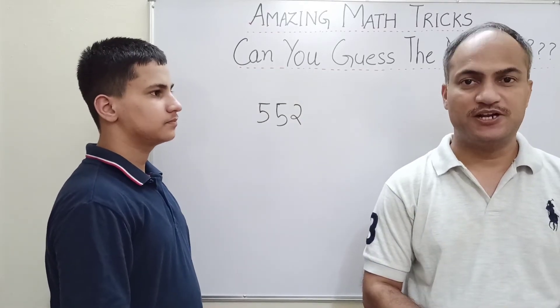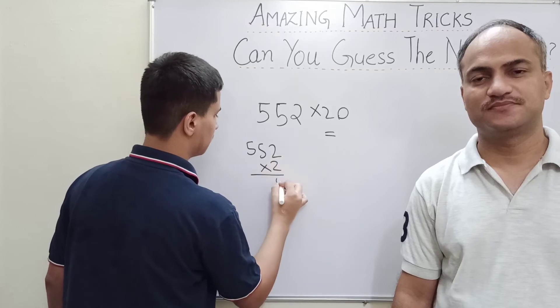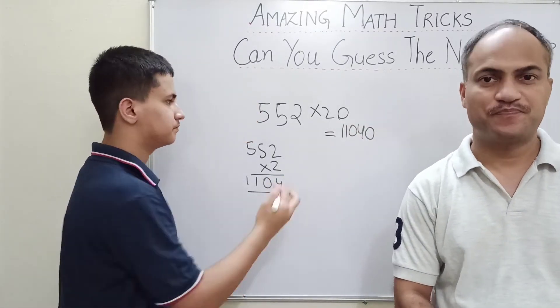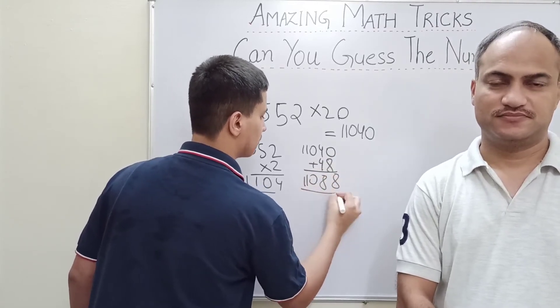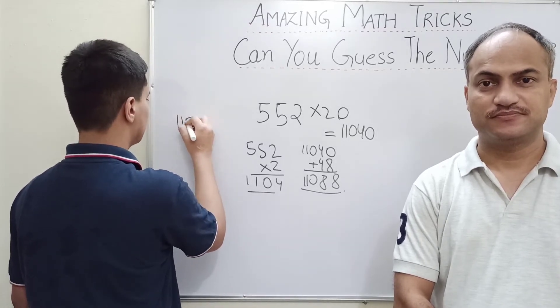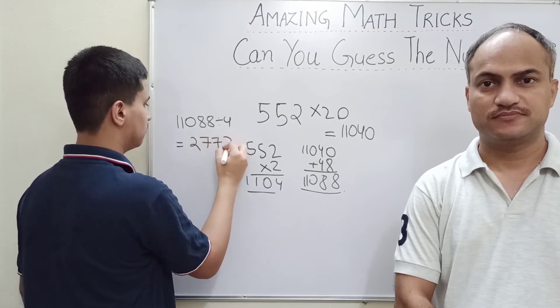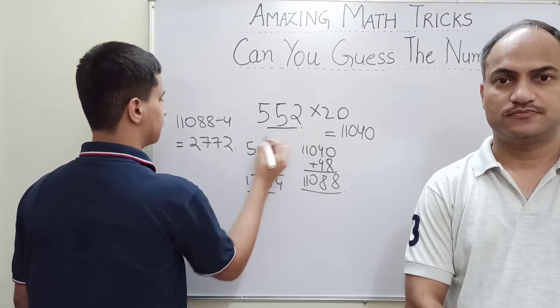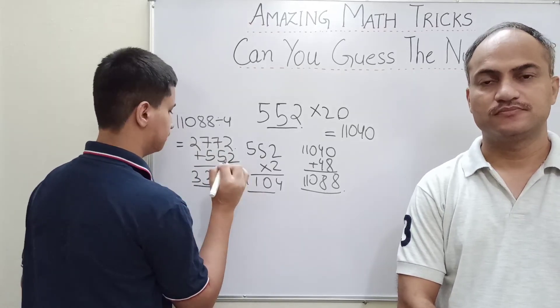Now multiply the number by 20. Now add 48 in the number. Divide the answer by 3. Now whatever you thought initially, that number you have to add now in the answer. Now finally, last operation, divide the answer by 6.